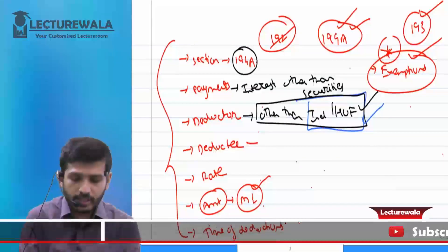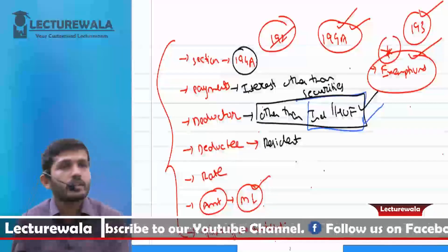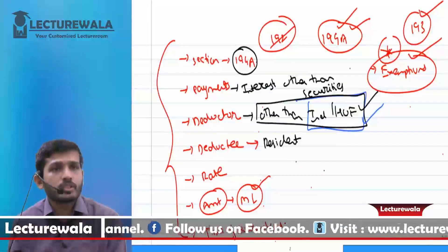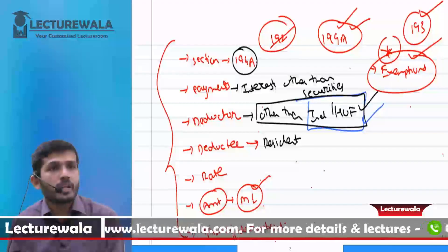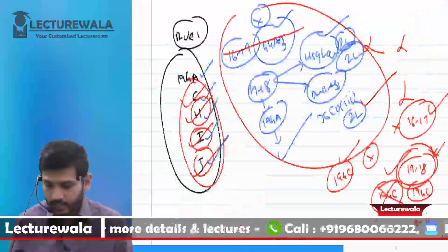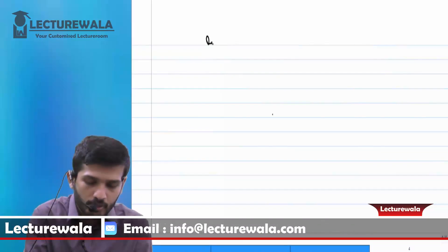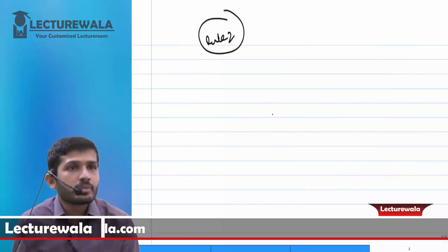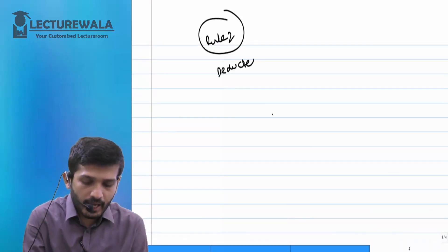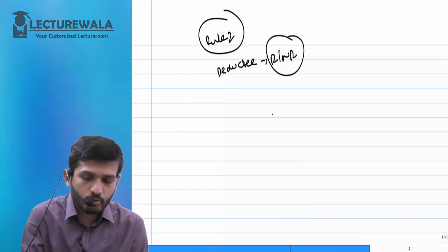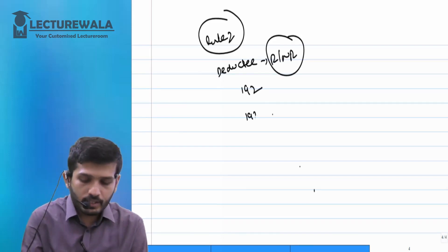Now, who should be the deductee? The deductee should be compulsorily a resident. If the deductee is a non-resident, TDS under 194A will not apply — it will go under section 195. So in all provisions we will study, deductee should be resident except in a few cases. That is Rule Number 2: in certain sections, deductee can be either resident or non-resident. The sections where both resident and non-resident are covered as deductee are: section 192 (salary), section 192A (recognized provident fund payment).